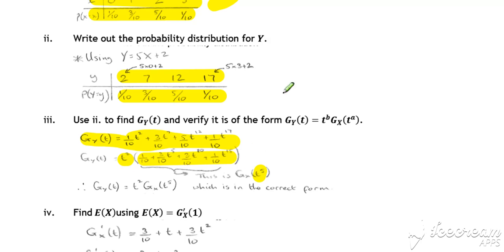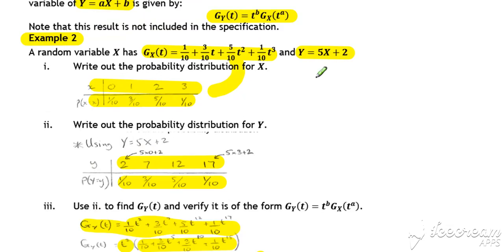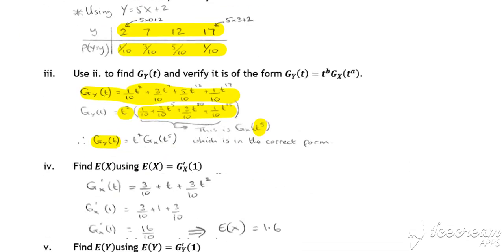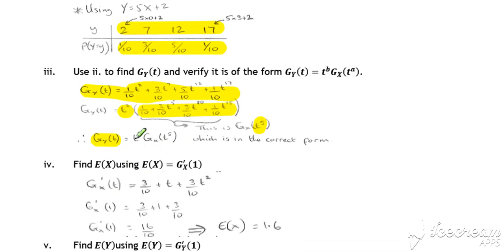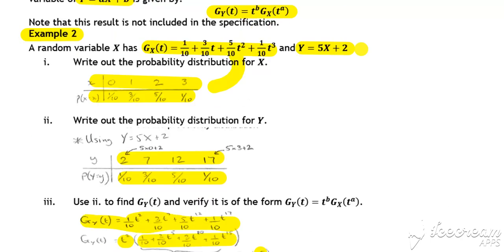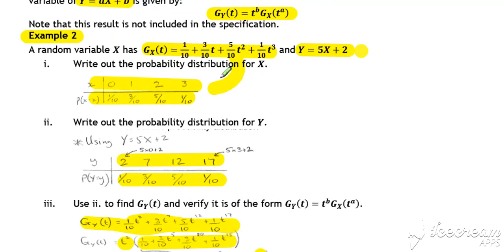So that confirms the above result that the probability generating function for Y where Y is equal to 5X plus 2 is equal to T squared, so T to the power of 2, times G_X of T to the 5. OK, so that's in the correct form justifying the above results.